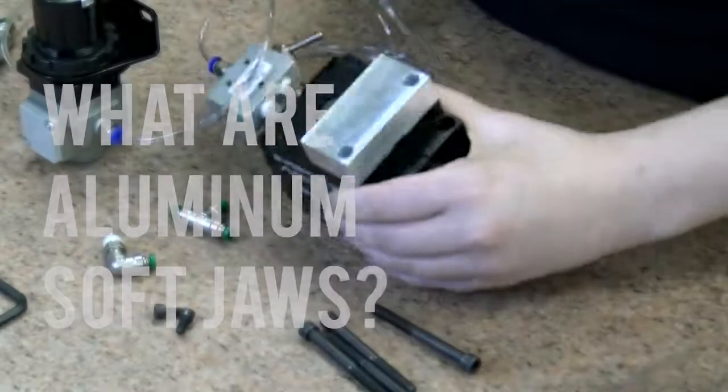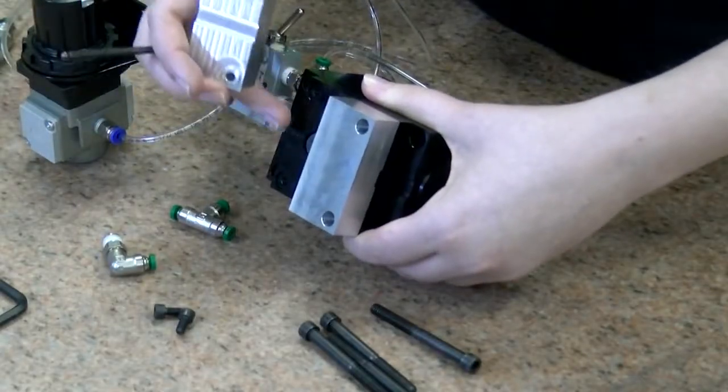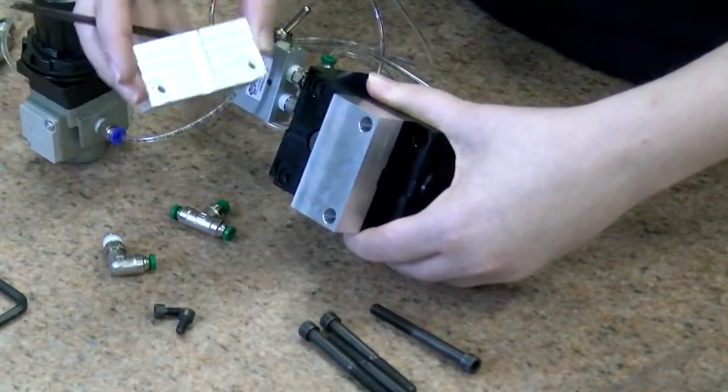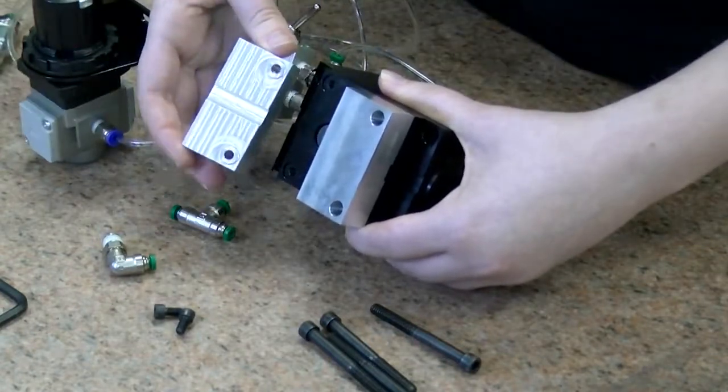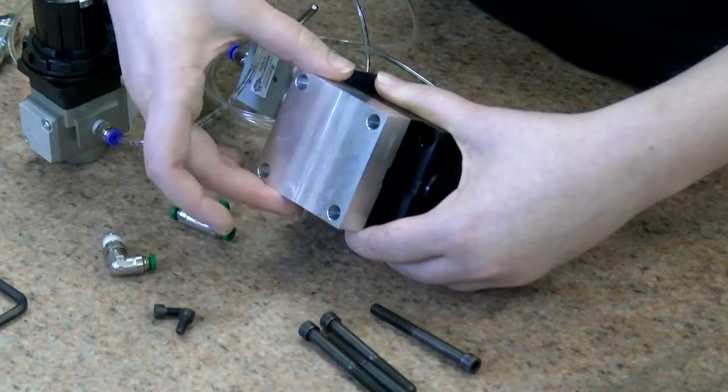The jaws come standard with the vise system. These are aluminum soft jaws and can be custom machined to hold whatever part you want. If you send us a solid model, we can do all the design and machine work for an additional fee and save you the time and effort.